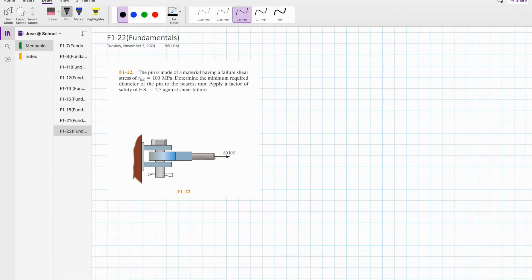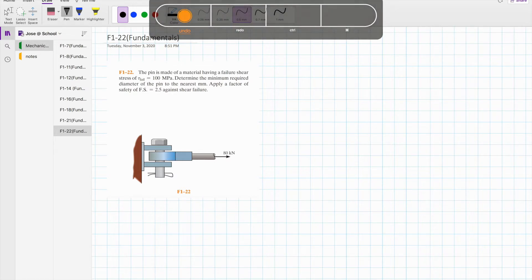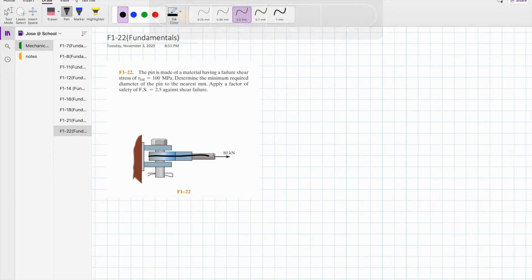The first thing you should do in this type of problem is show all the forces acting on the member. You can clearly see an 80 kN force acting on the X component right here and it is positive. As 80 kN is pushed to the right, two shear forces are generated to the left at this point. One here and another one here. These are two shear forces.